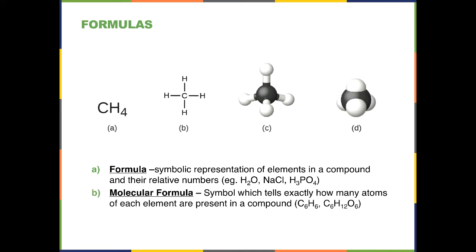The molecular formula is the symbol which represents exactly how many atoms of each element are present in a compound. For example, benzene is C6H6 and glucose is C6H12O6. Benzene has exactly six hydrogen atoms and six carbon atoms in one molecule. Glucose has six carbon atoms, twelve hydrogen atoms, and six oxygen atoms. The subscripts always tell you how many of each atom there is in a molecular formula.